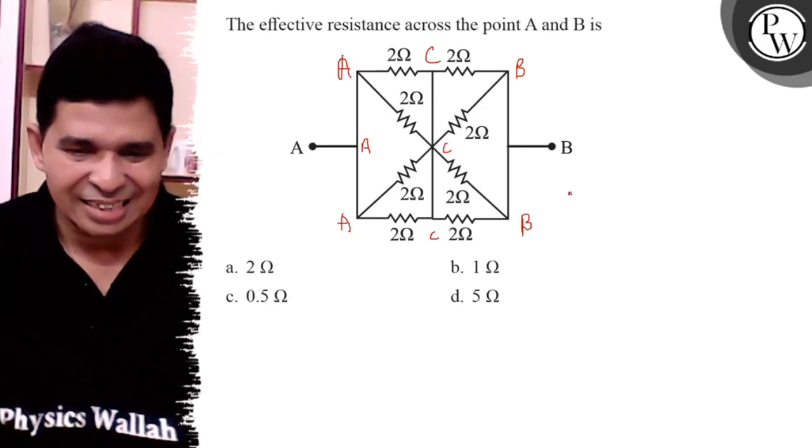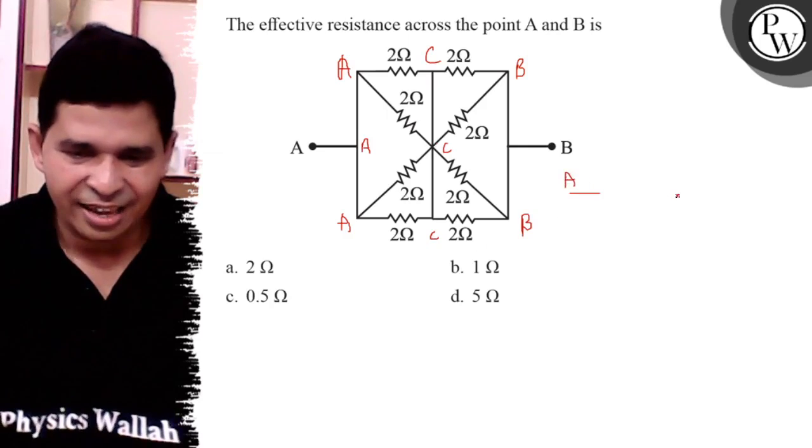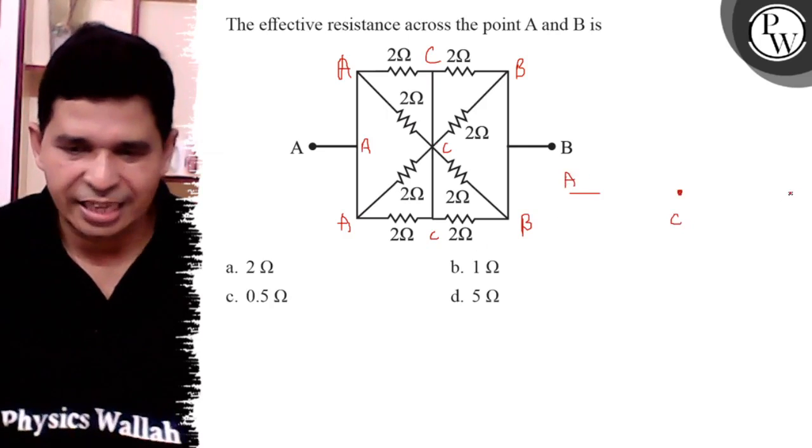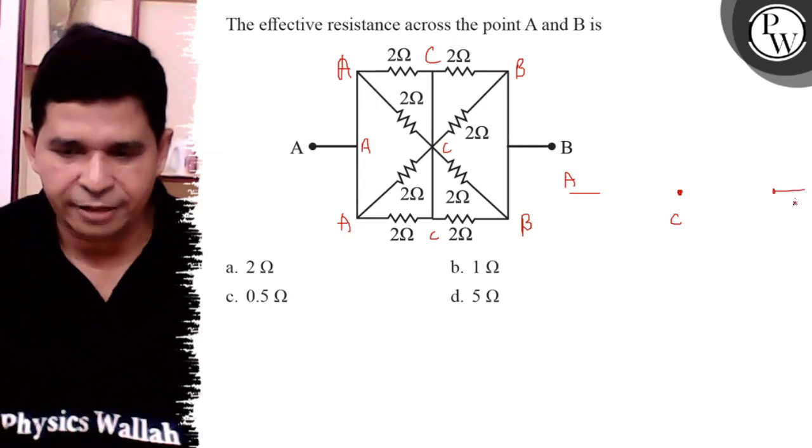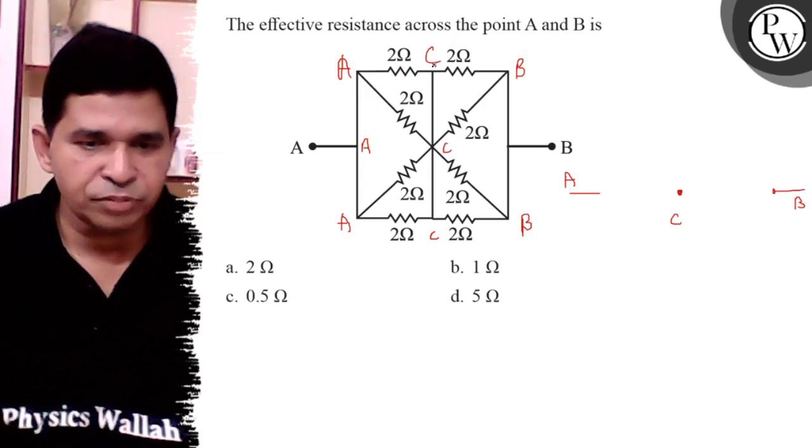When we make that circuit, it is the A and it is point C and it is point B. Now, in between A and C,